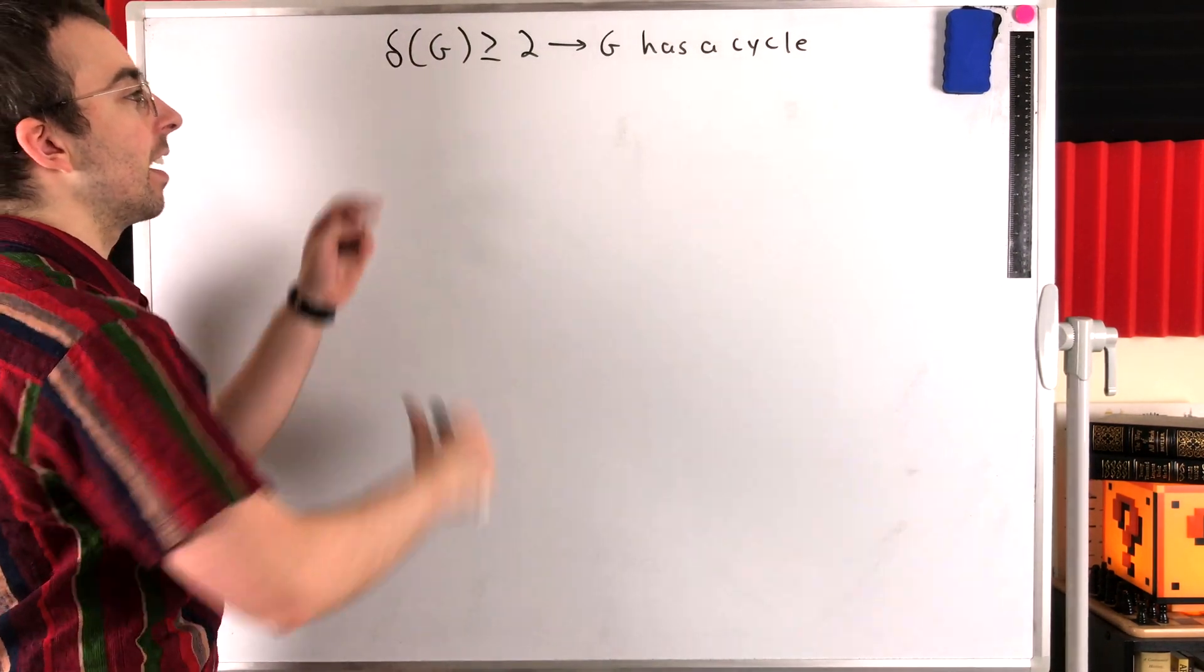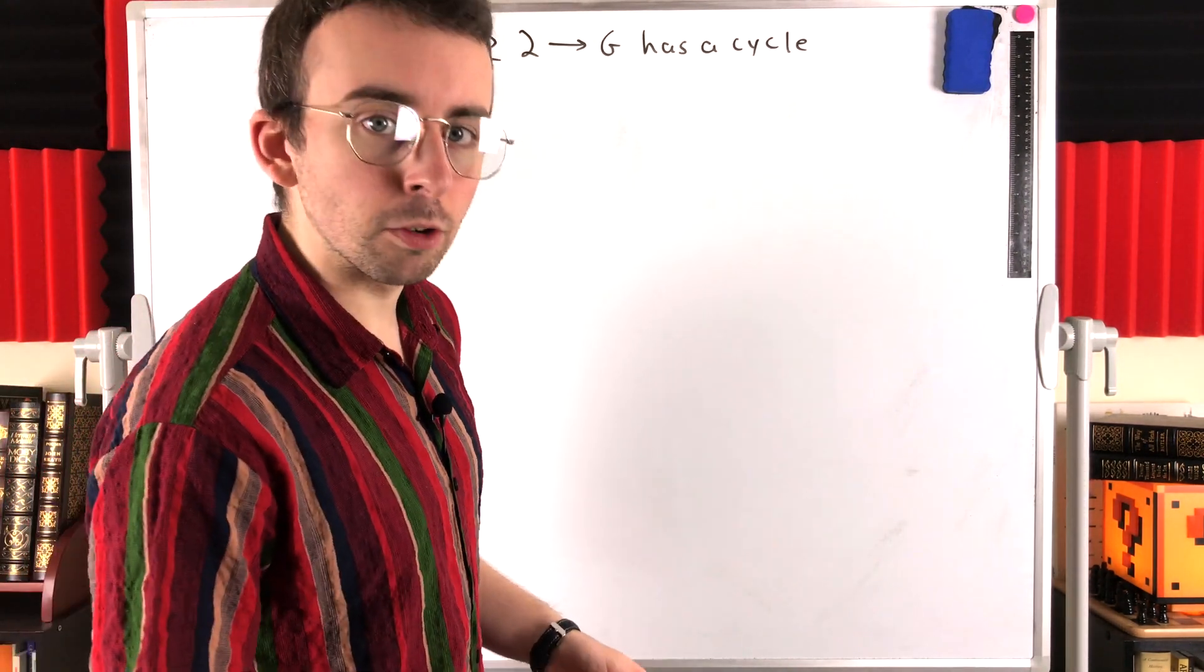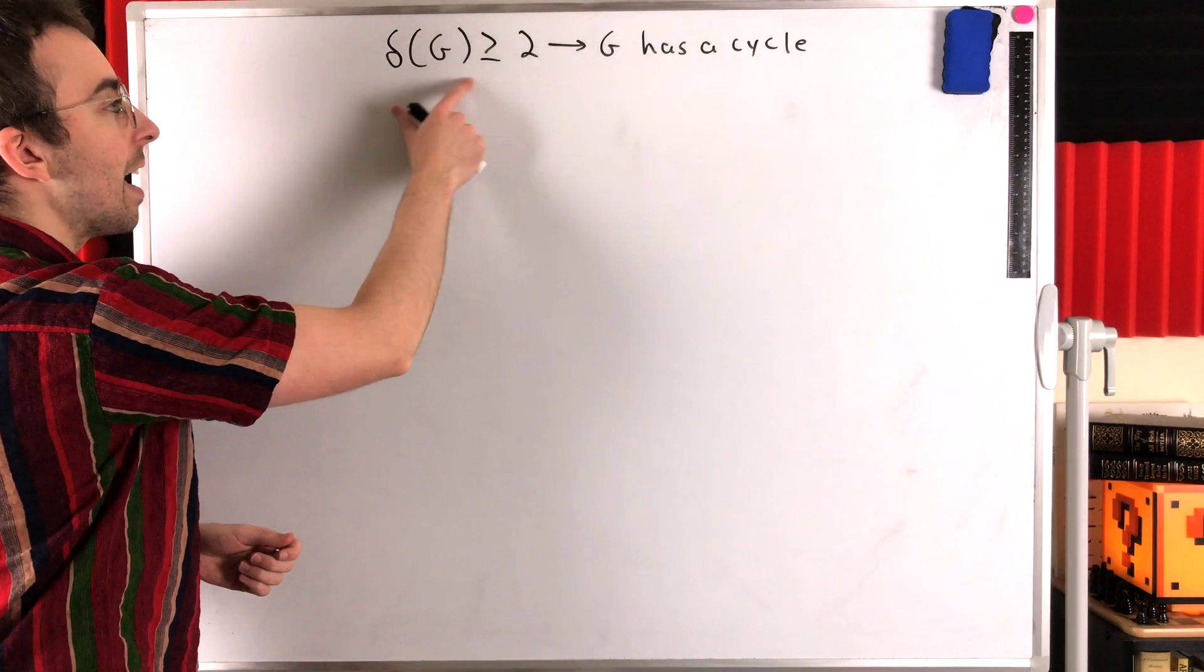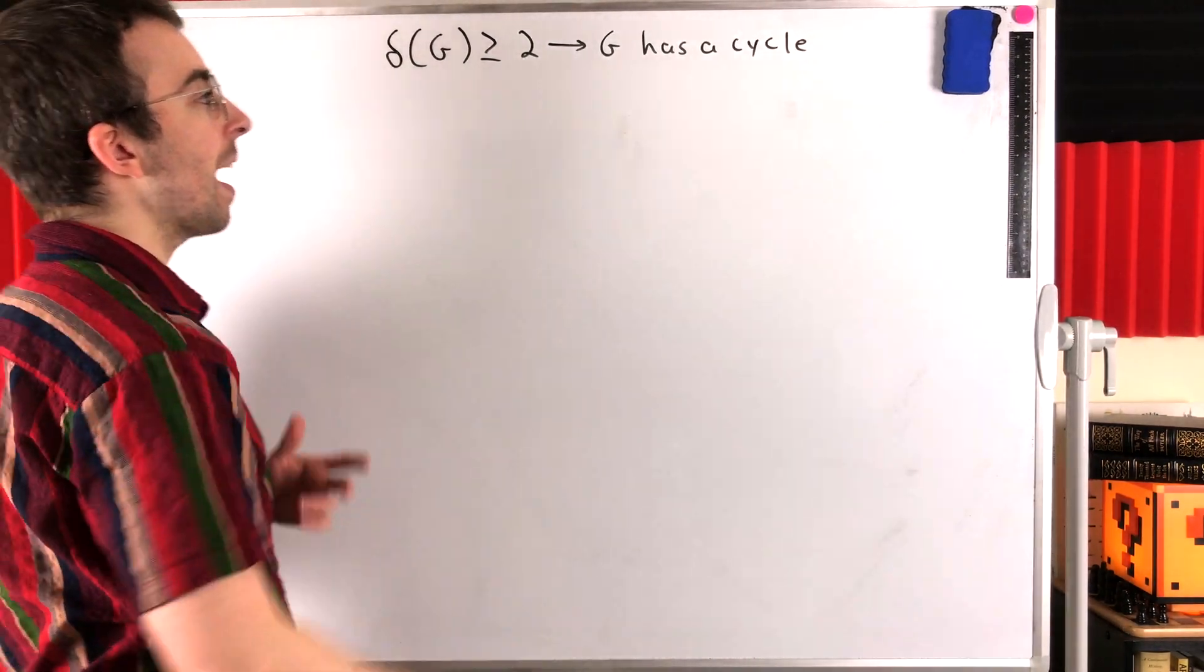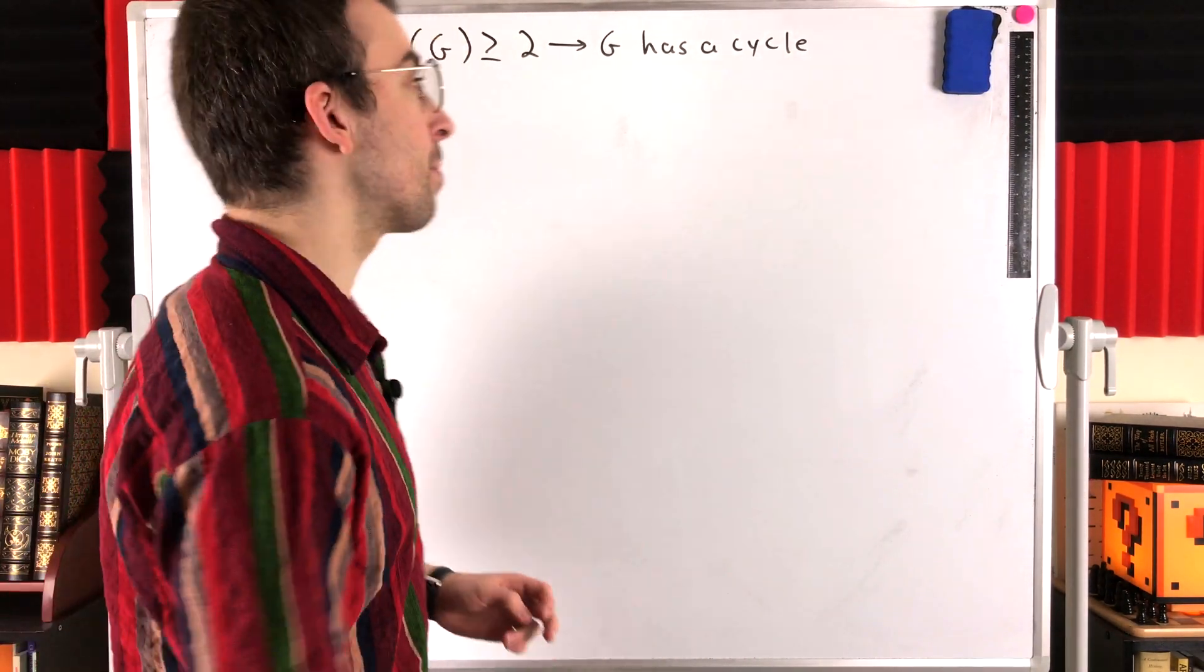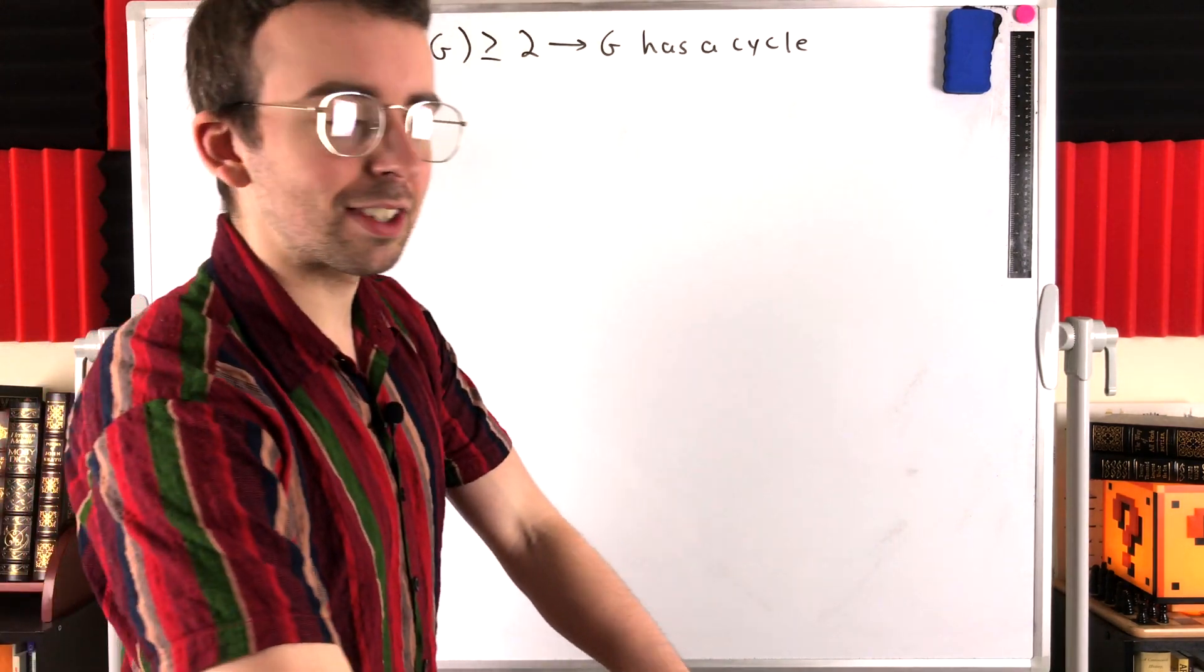So this is lowercase delta of G, that's the minimum degree of a graph. This means that every vertex in G has to have at least two neighbors. That's going to force G to have a cycle.